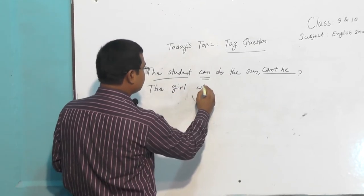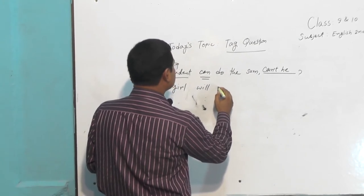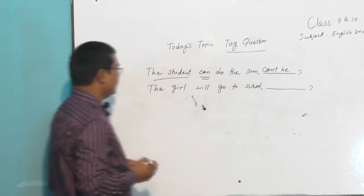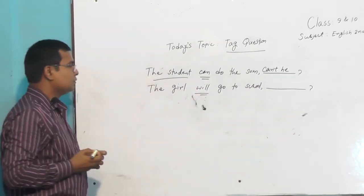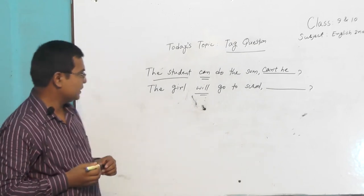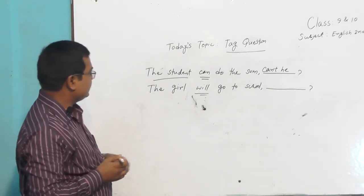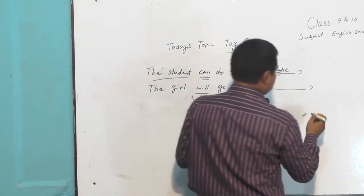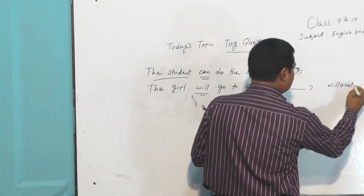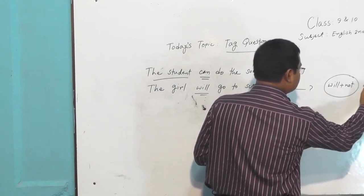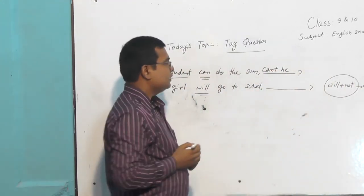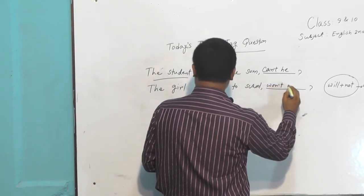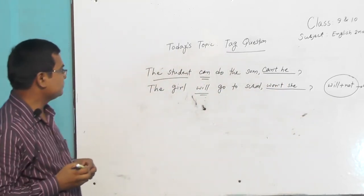'The girl will go to school.' Another example. Here I have written the auxiliary verb 'will'. It is called modal auxiliary. So what will be the answer here? 'Will' and 'not' will be used. Look, 'will' plus 'not' - it will be used in contracted form in this way. You will not write 'will not', you will write 'won't'. 'Won't she'.